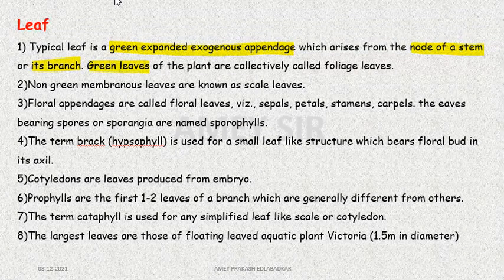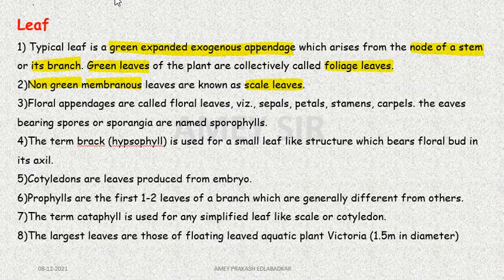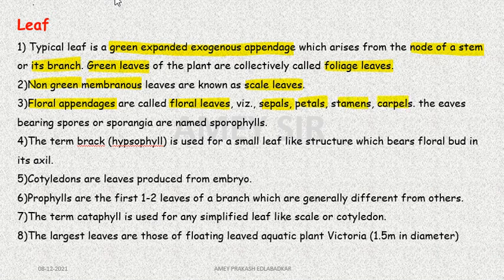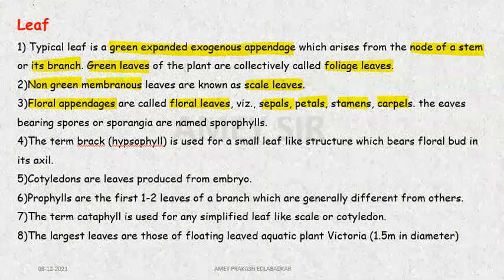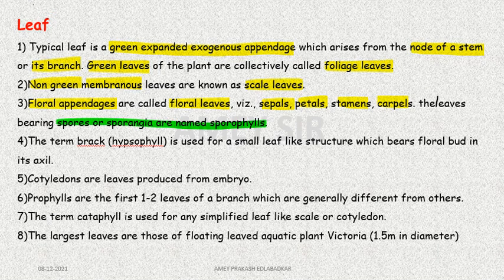The green leaves are called foliage leaves and the non-green membranous ones are called scale leaves. Floral leaves are the floral appendages — sepals, petals, stamens, and carpels. Leaves on the spore-producing organ are called sporophylls. The leaf-like structure associated with floral buds is called a hypsophyll.